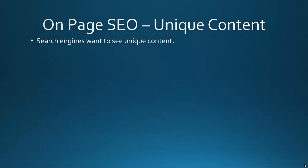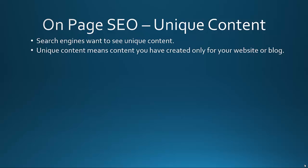Now we're going to talk about unique content. Search engines want to see unique content — content that you've created only for your website or blog. It's not found all over the web; it's unique to your website and can only be found there. It's not syndicated all over the web. If you do copy and paste anything, always preface it with a link to the resource, don't include the entire article, and write your own paragraph or two of opinion on why you chose it. Always add unique value.